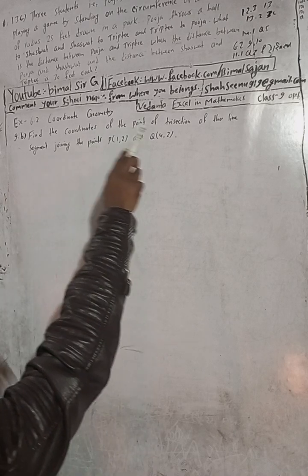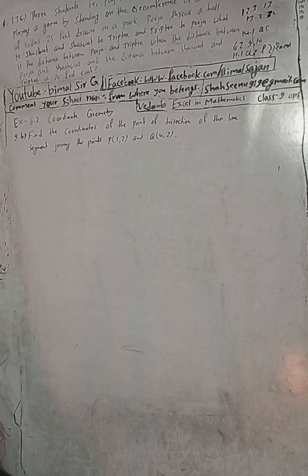Vedant excel in optional mathematics. Don't forget to check the Beemar Sharjee playlist — here you will get all the solutions. If you have a question, please do not forget to comment. Leave your question in the comments. I am solving the coordinates of the point of trisection of the line segment.